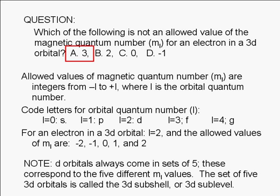Note that d orbitals always come in sets of 5. The 5 orbitals in the set correspond to the 5 different m sub l values. The set of 5 3d orbitals is called the 3d subshell, or the 3d sublevel.